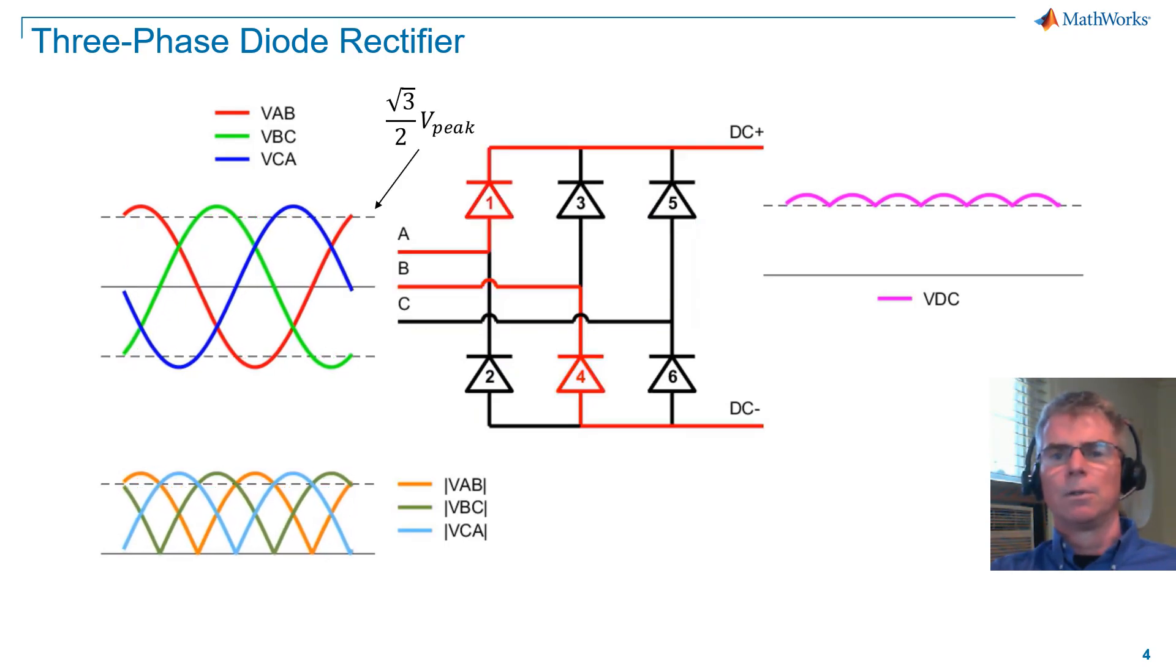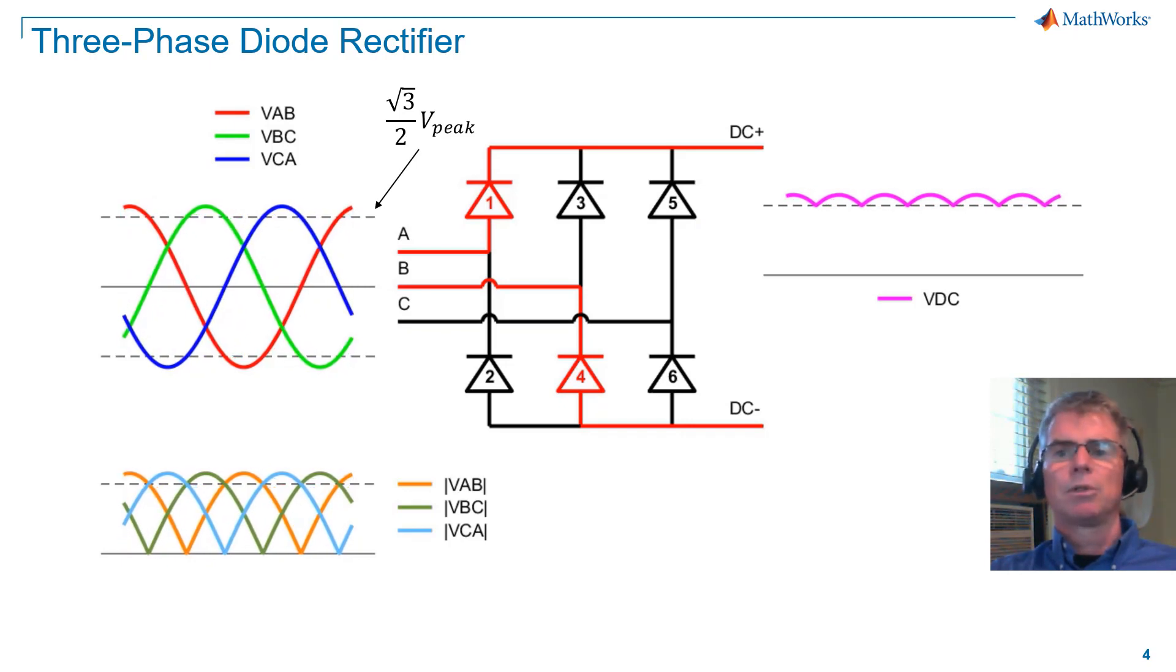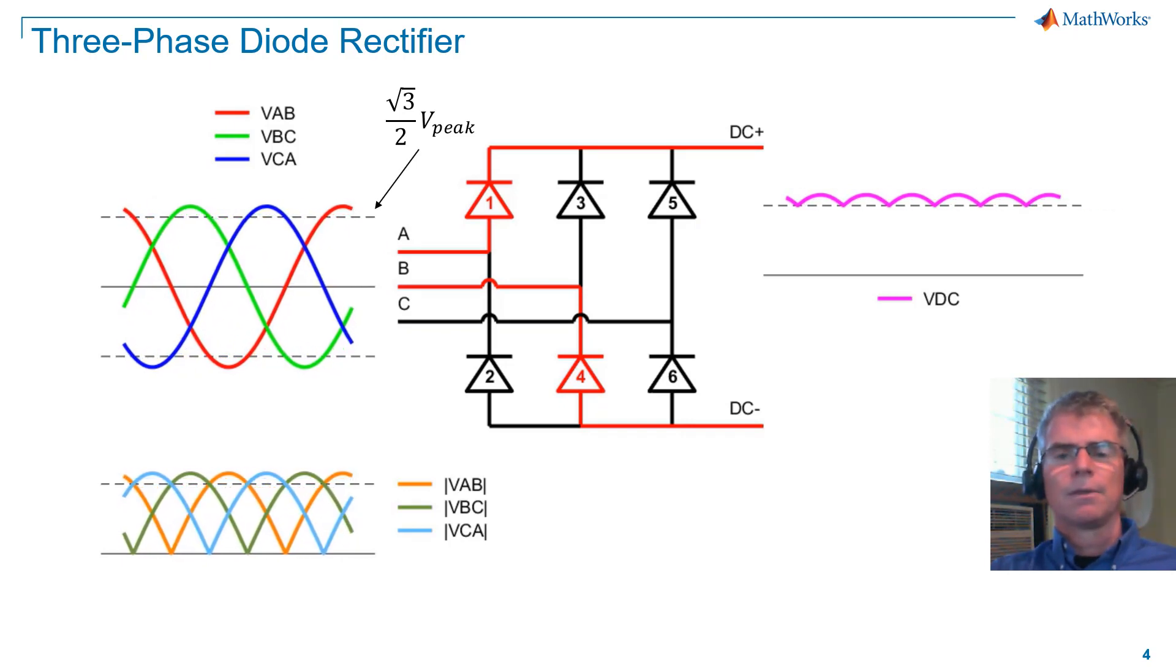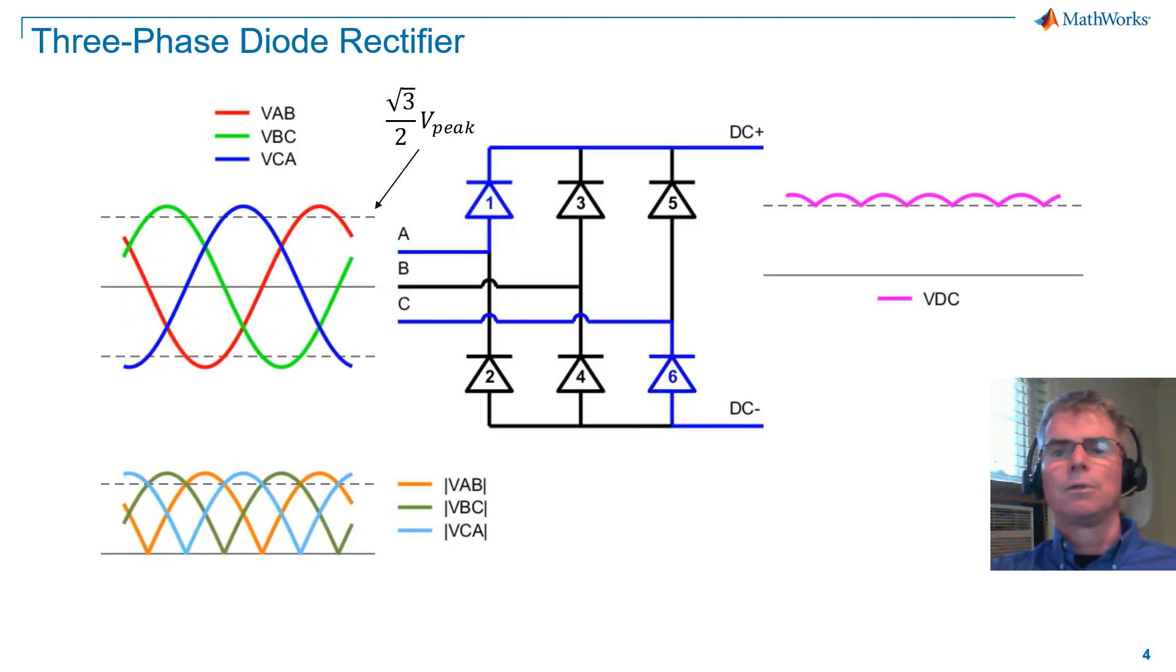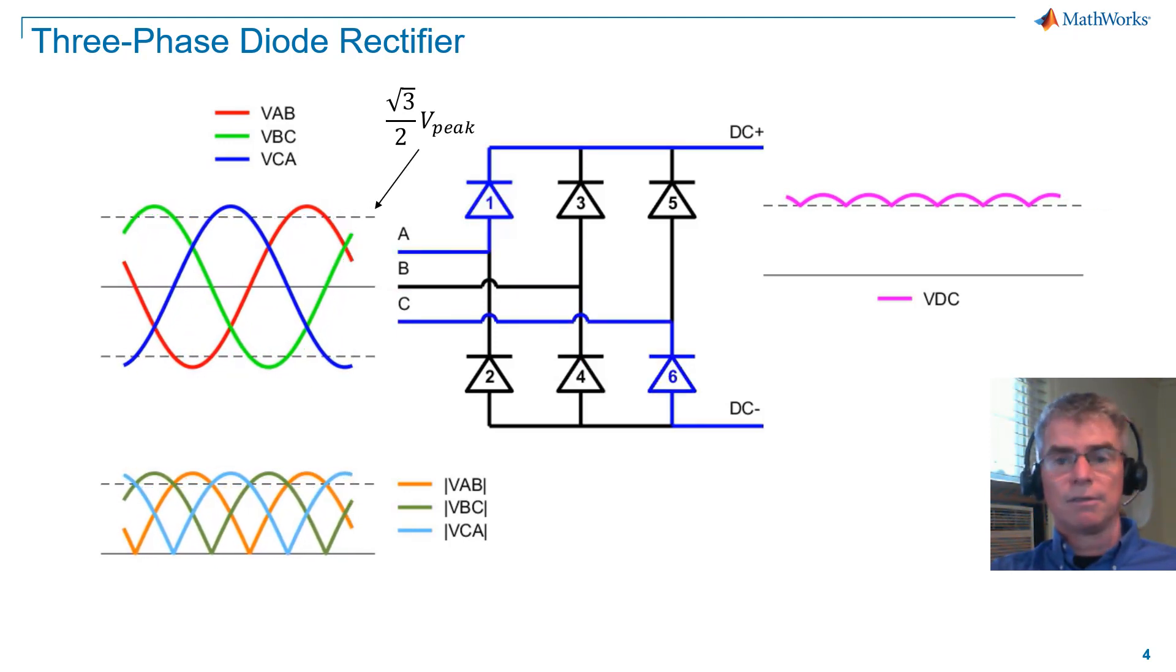If you look at the plot on the lower left, I'm showing the absolute values of the line voltage magnitudes. The diodes will conduct when they are forward biased, and so we need to look at the line voltage magnitudes relative to each other.